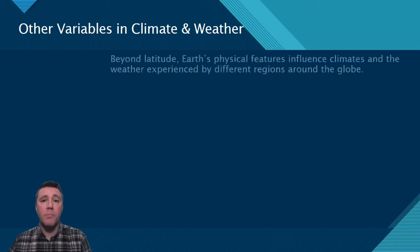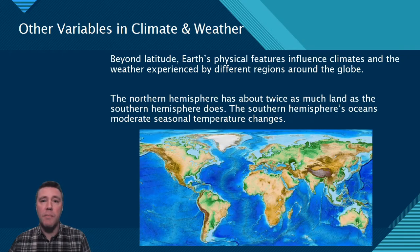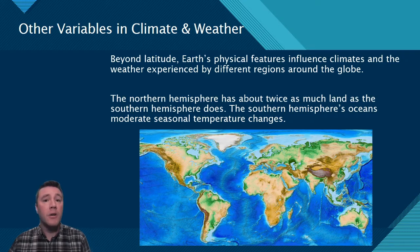Although latitude is the most significant variable in resulting climate patterns, geographic features such as mountain ranges and the size of continental masses also play a role. Since the southern hemisphere has substantially more ocean than the northern hemisphere, and water has a very high capacity for absorbing heat, annual temperature variations tend to be less dramatic in the southern hemisphere but more varied in the northern hemisphere.